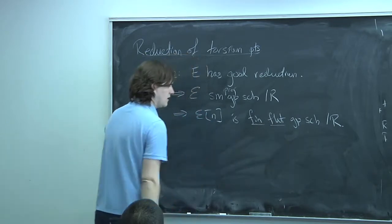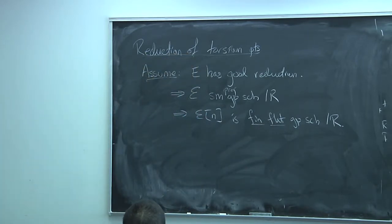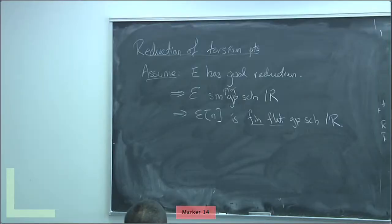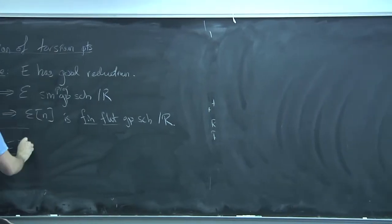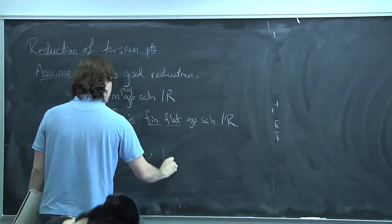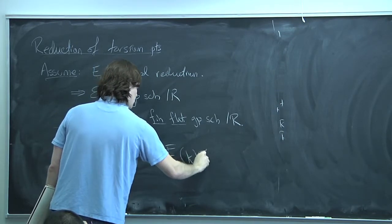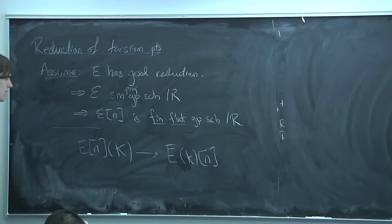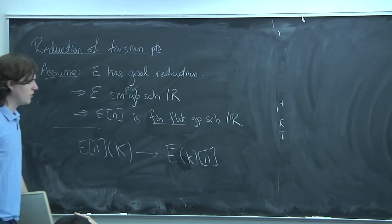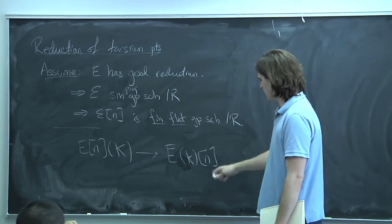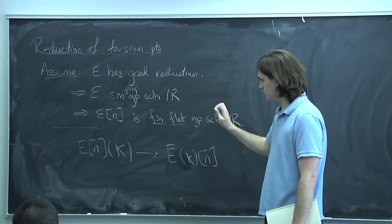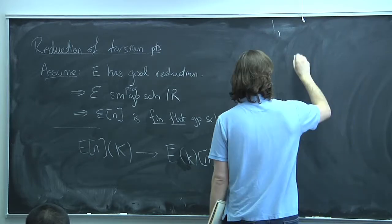This implies that the N-torsion is a finite flat group scheme over R. The map I want to study is something like the N-torsion of E over K-bar mapping down to the special fiber. If N is prime to the residue characteristic, then this map is an isomorphism. Let me state that more generally as a proposition.